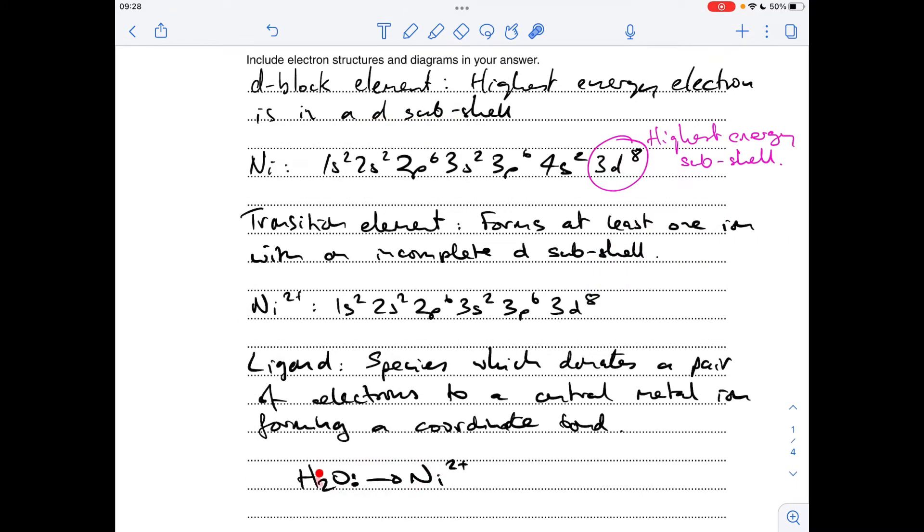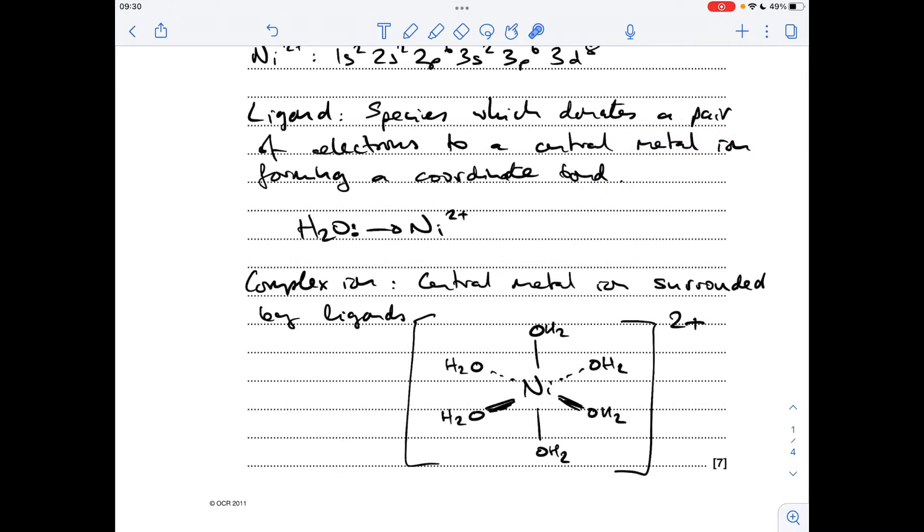For the purpose of illustrating this, I'm doing a very simple representation. I'm going to draw the full complex in the next answer because we've got to explain what a complex ion is, but that's getting across the point that the oxygen on the water molecule is providing that pair of electrons, donating them to the nickel 2+ ion. Complex ion is defined as a central metal ion surrounded by ligands. I'm going to draw the full [Ni(H₂O)₆]²⁺ complex.